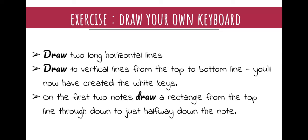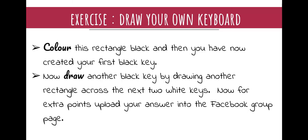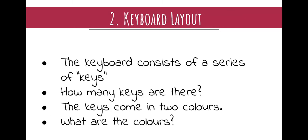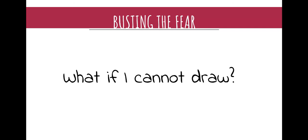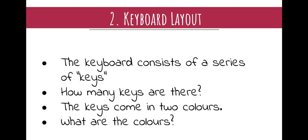On your white keys — which I'll call notes — take the first two vertical lines and draw a rectangle between them from the top of the page down halfway, then color it in black. That creates your first black key. Draw another rectangle across the next two white keys to create a second black key — that's your first set of two black keys. Continue by drawing a pattern of three black keys for the next group. The keyboard consists of 88 keys in a series of white keys and black keys — those are the two colors.